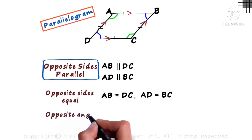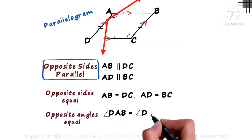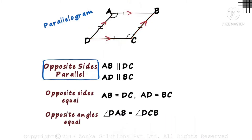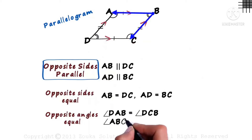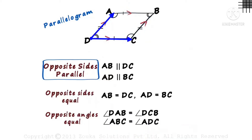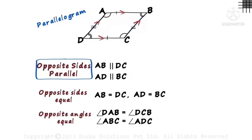Next, opposite angles are also equal. So, angle DAB is equal to angle DCB. Next, angle ABC is equal to angle ADC. So, in a parallelogram, the properties are: opposite sides are parallel, opposite sides are equal, and opposite angles are equal.